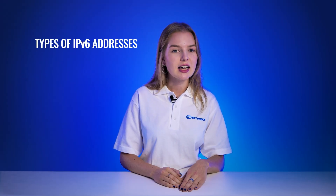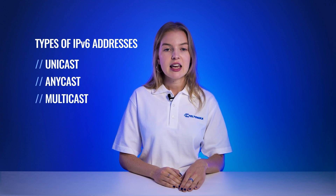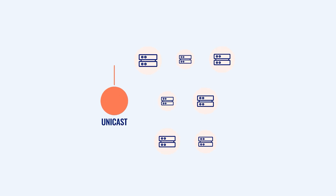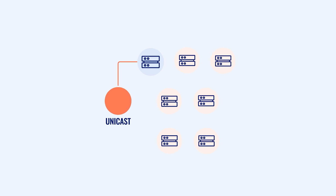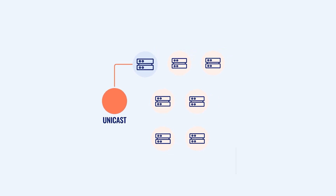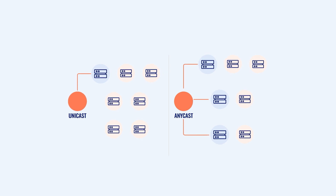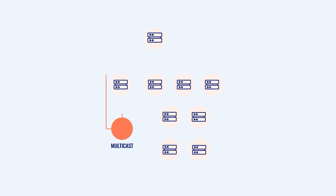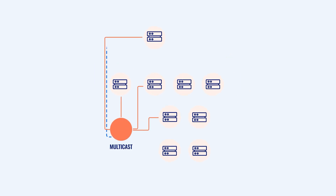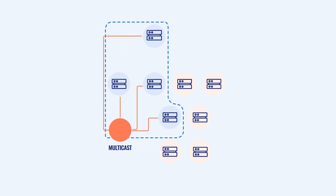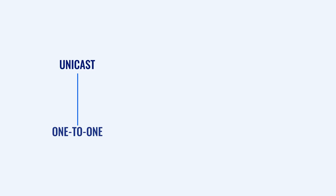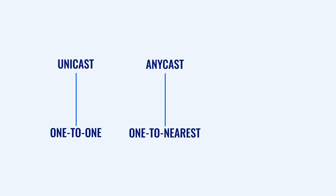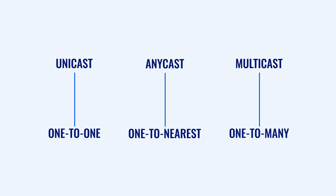IPv6 addresses come in three types: unicast, anycast, and multicast, each serving different data transmission needs to enhance network performance, security, or scalability. Unicast is for one-to-one communication, sending data to a single specific interface. Anycast uses one-to-nearest communication, where multiple devices share the same address and the network sends the packet to the nearest device based on routing distance. Multicast is for one-to-many communication, delivering data to all interfaces subscribed to a specific group. The key difference is that unicast targets one interface, anycast targets the nearest of multiple interfaces, and multicast targets all subscribed interfaces.